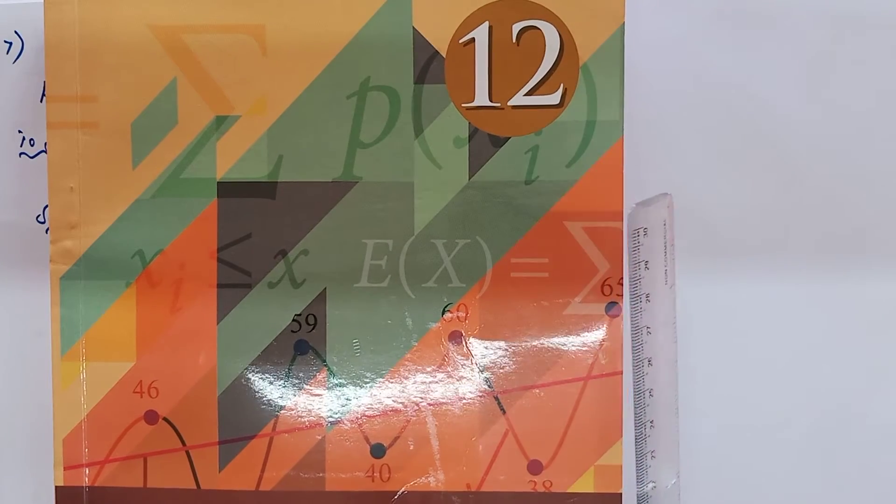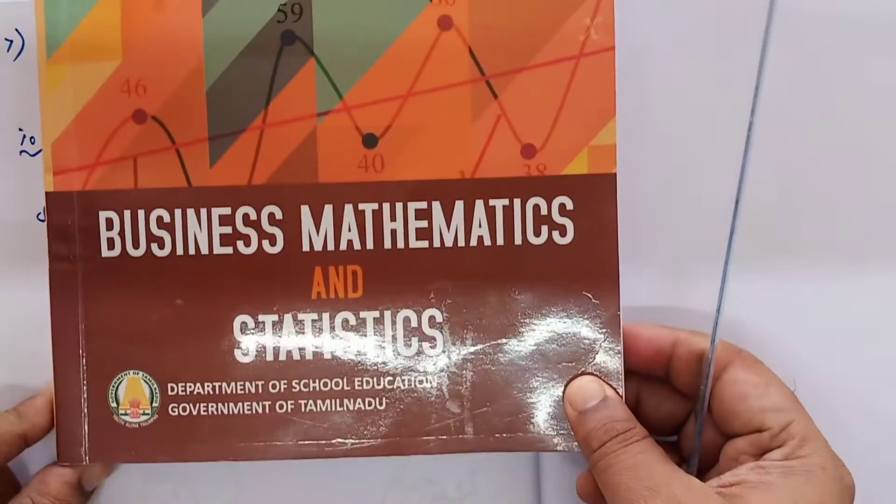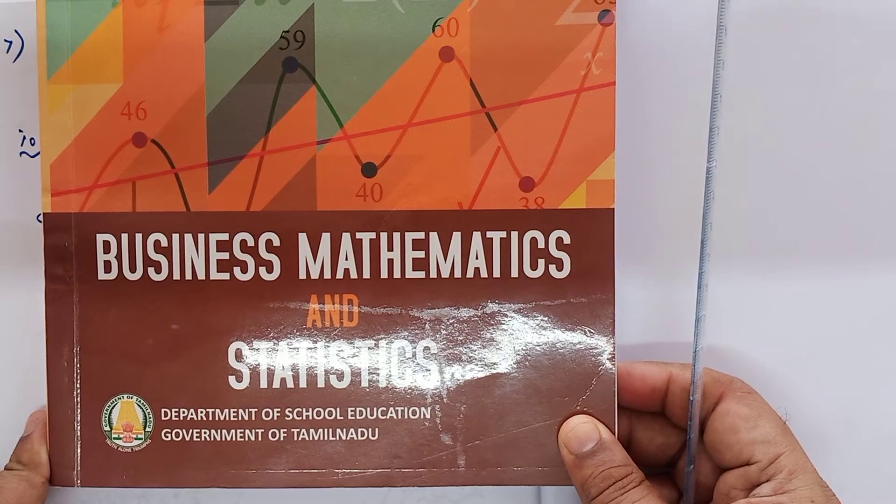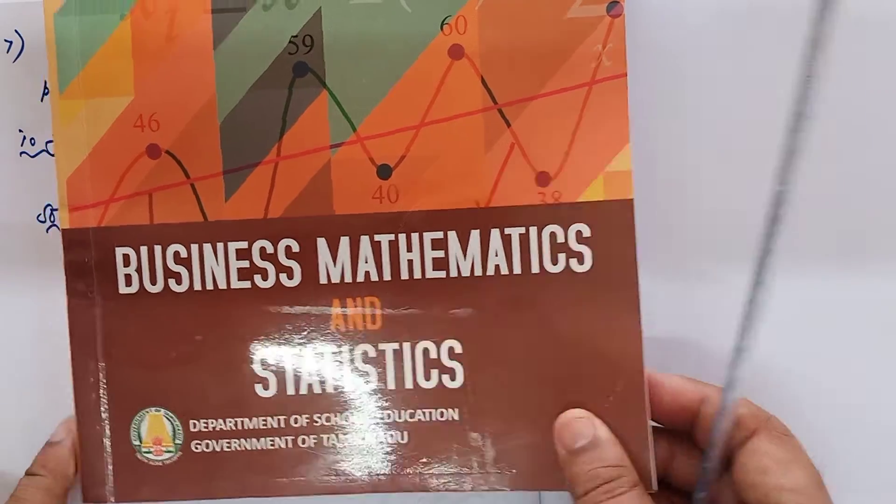Hi students, this is Vokumar. 12th standard distance mathematics and statistics, chapter number 7, continuation of exercise 7.2, now problem number 7.